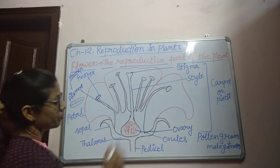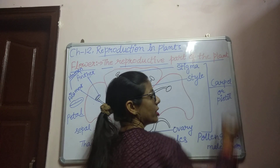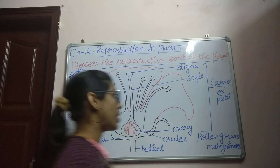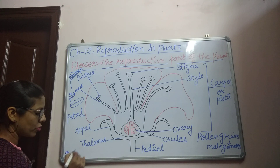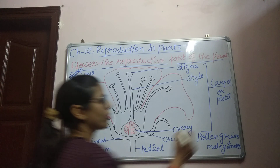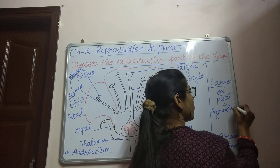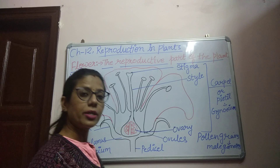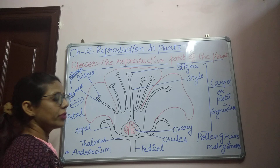The female reproductive part of the flower is known as the carpel or pistil. Sometimes you may read from some books that the male reproductive part is known as androecium and the female reproductive part is known as gynoecium. The female reproductive part, the carpel, is composed of three parts: stigma, style, and ovary.